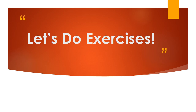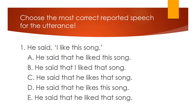Now let's do exercises. Use the most correct reported speech for the utterance. Number one: he said 'I like this song.' A. He said that he liked this song. B. He said that I liked that song. C. He said that he likes that song. D. He said that he likes this song. E. He said that he liked that song.